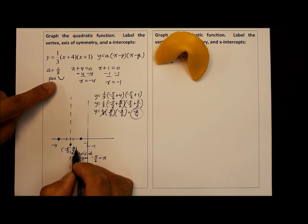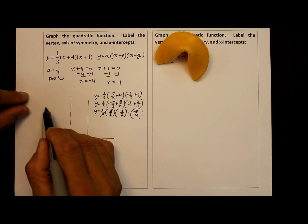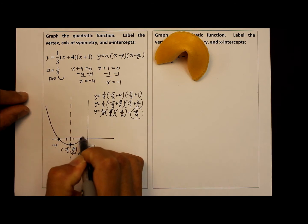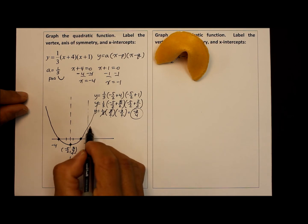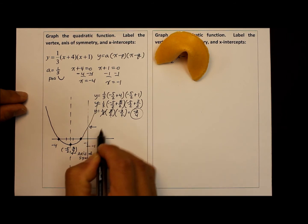And just like we predicted in the beginning, since it's positive, the coefficient a is going to open upward. And there you have it. Now, for some of you perfectionists, you may want to also determine what the y-intercept is. Well, the parabola crosses the y when the x is zero. So let x equal zero.